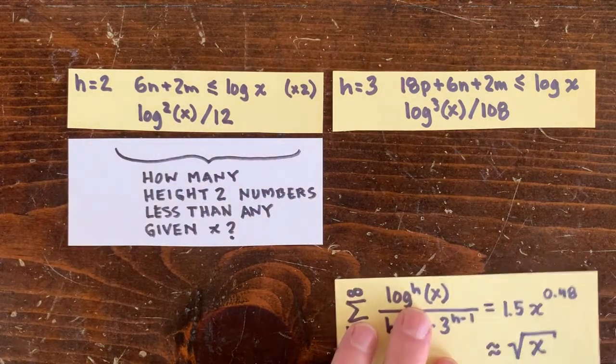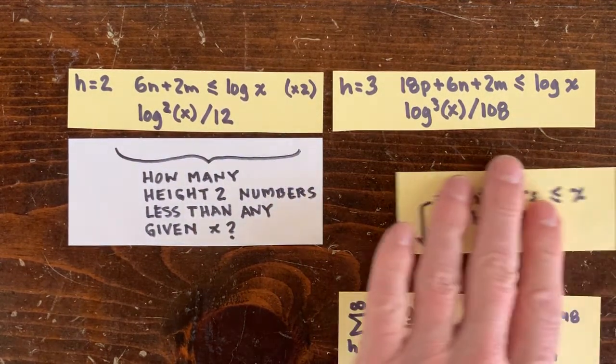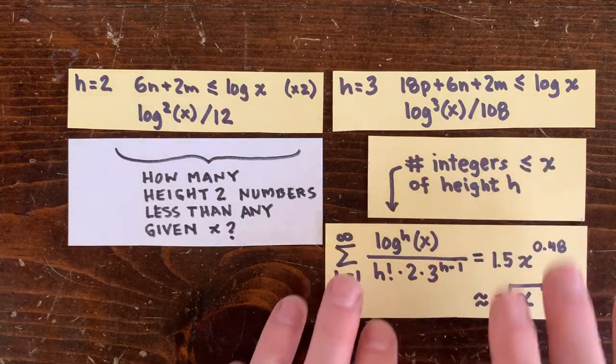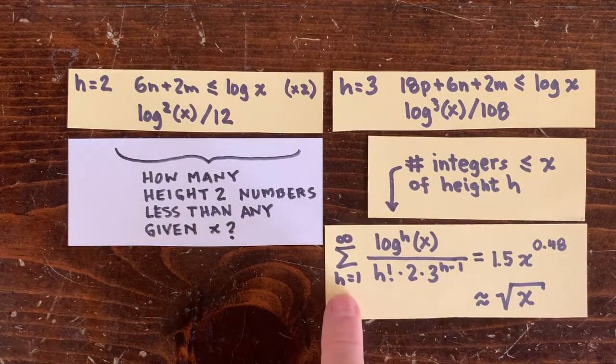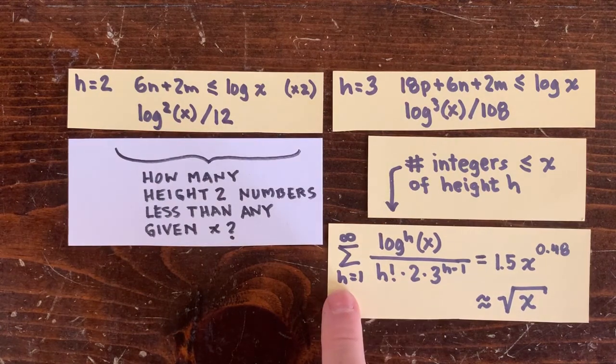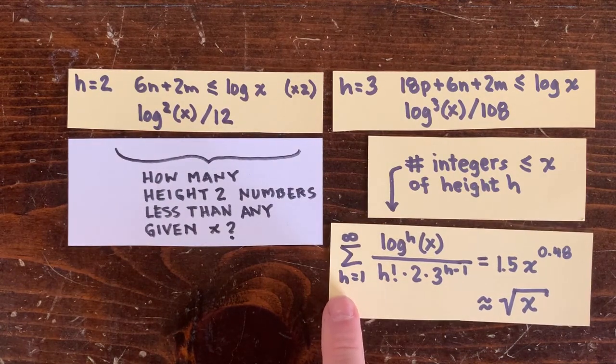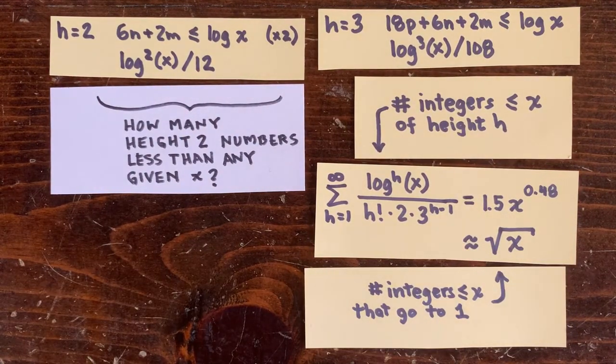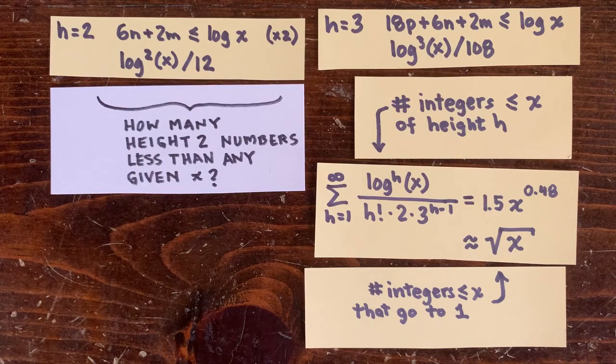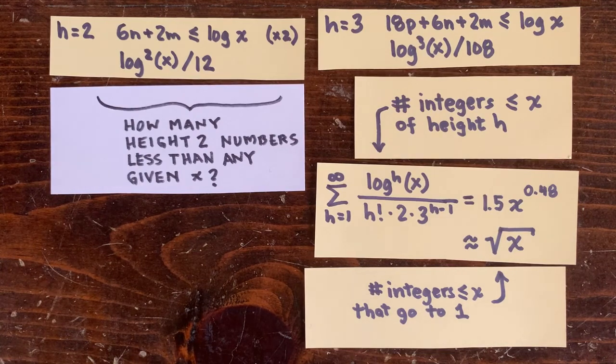And in general, we get log to the h of x over h factorial times 3 to the h minus 1. And we can now sum this expression across h from 1 to infinity. And that will give us the total number of integers that we know will go to 1 for sure. And it comes out to about square root of x.